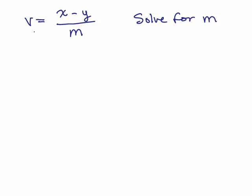Here's another one. V equals x minus y over m and we're going to solve for m. Since this contains a fraction, you can multiply both sides by the least common denominator, which is m. So let's do that if I multiply both sides by m.